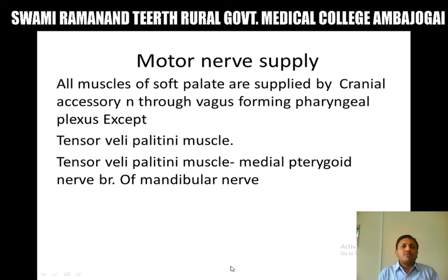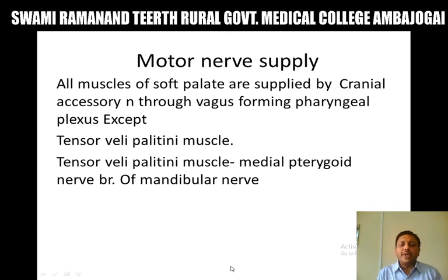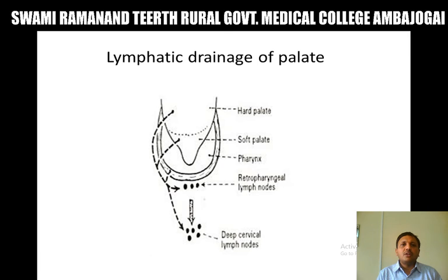Motor nerve supply of the soft palate: all muscles of the soft palate are supplied by the cranial accessory nerve through the vagus, forming the pharyngeal plexus — except the tensor veli palatini, which is supplied by the medial pterygoid nerve, a branch of the mandibular nerve. Lymphatic drainage is by the upper deep cervical group of lymph nodes and the retropharyngeal group of lymph nodes.